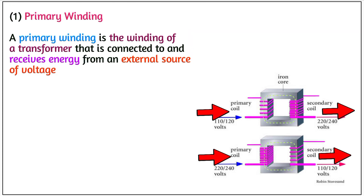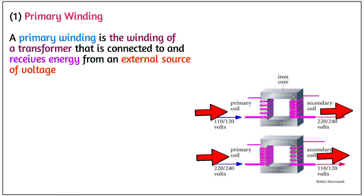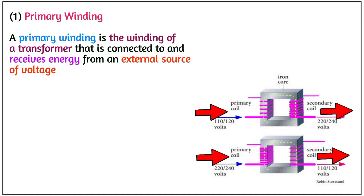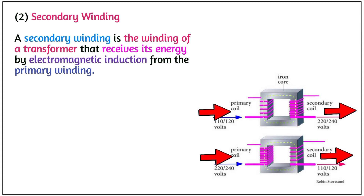Number 1: Primary winding. The input side is always the primary winding. A primary winding is the winding of the transformer that is connected to and receives energy from an external source of voltage. Number 2: Secondary winding. The secondary winding is the winding of the transformer that receives its energy by electromagnetic induction from the primary winding.